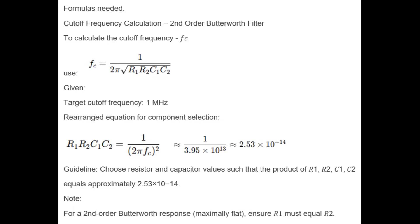Guideline: choose resistor and capacitor values such that the product of R1, R2, C1, C2 equals approximately 2.53 times 10 to the minus 14th. Note: for a second-order Butterworth response — maximally flat — ensure that R1 must equal R2.